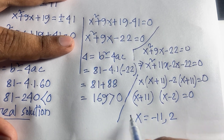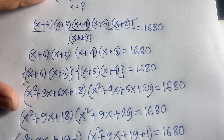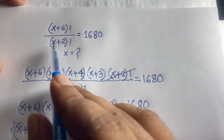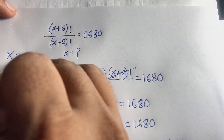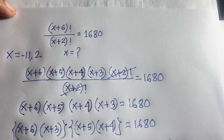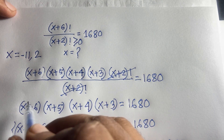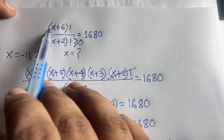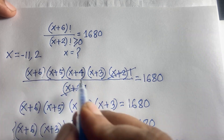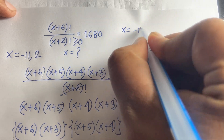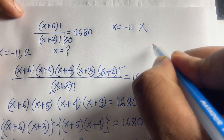Checking the domain: factorials require non-negative arguments, so (x+2) ≥ 0. For x = -11, x+2 = -9, which is negative — not valid. So x = -11 is not possible.